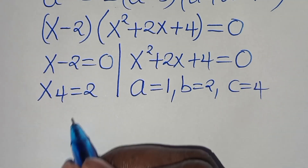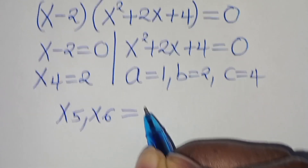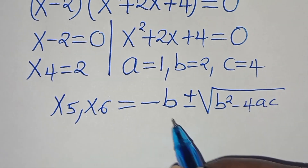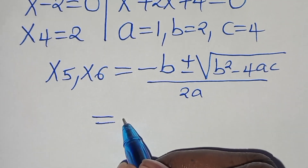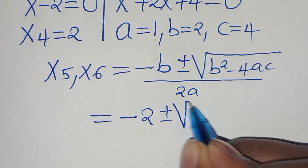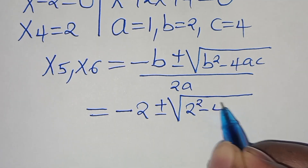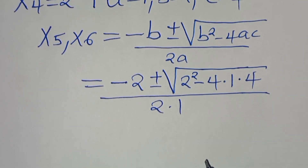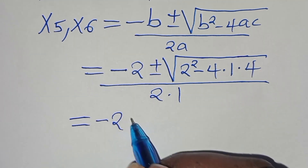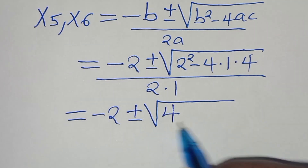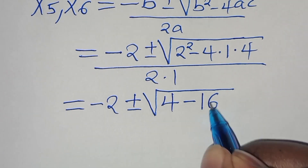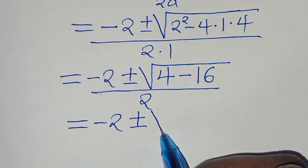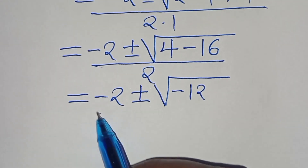The second part is a quadratic equation with a equal to 1, b equal to 2, and c equal to 4. We solve for x₅ and x₆ by applying the quadratic formula: minus b plus or minus the square root of b squared minus 4ac over 2a. This gives minus 2 plus or minus the square root of 4 minus 4 times 1 times 4, all divided by 2.